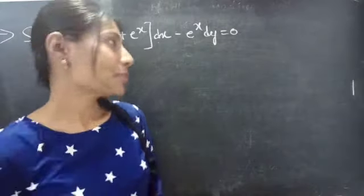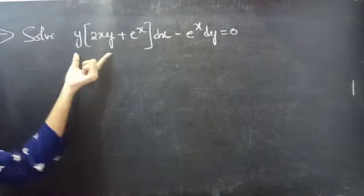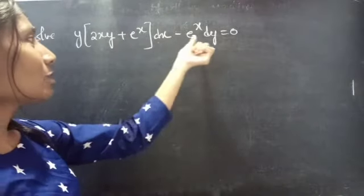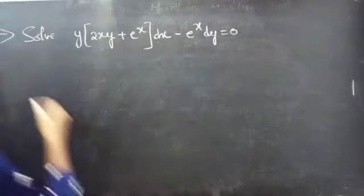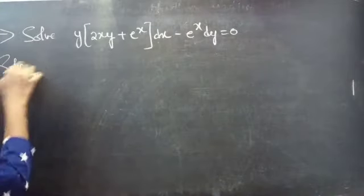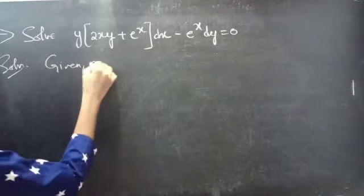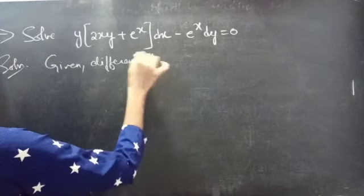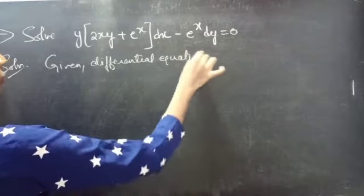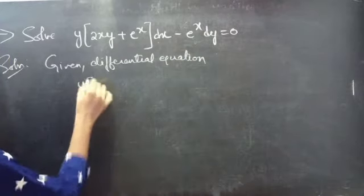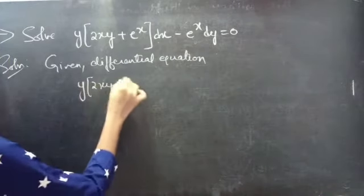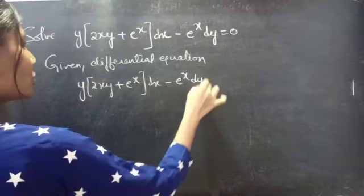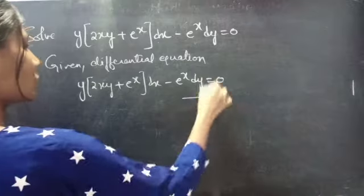Let's get started. Problem: Solve y(2xy + eˣ)dx − eˣ dy = 0. Solution. This is the given differential equation — consider it as equation number 1.